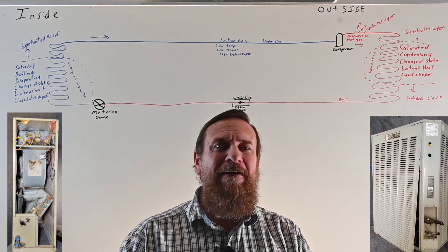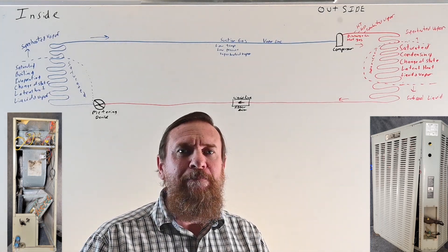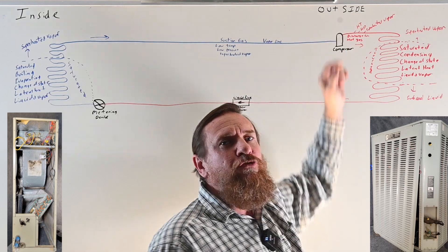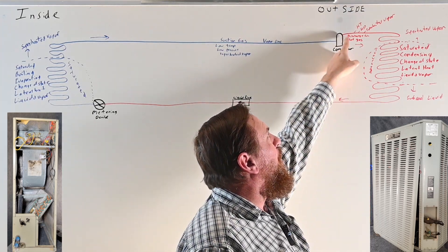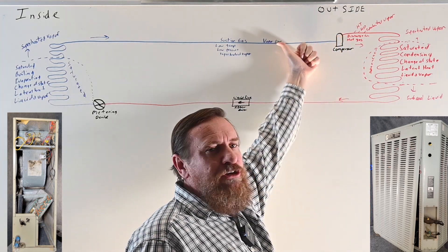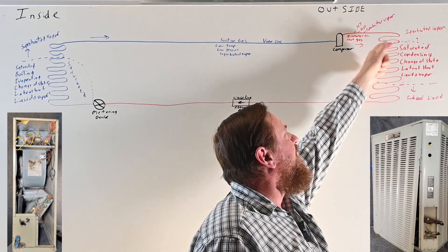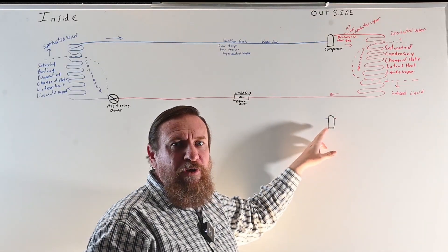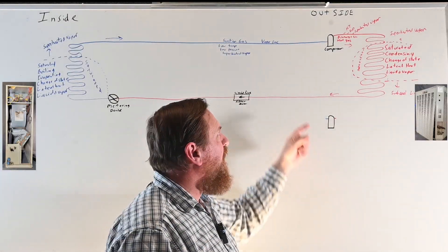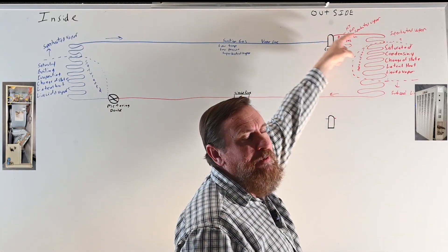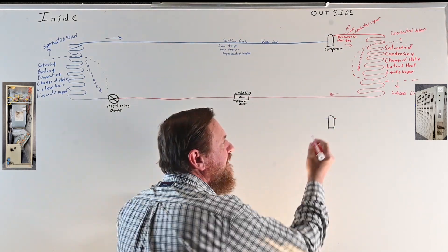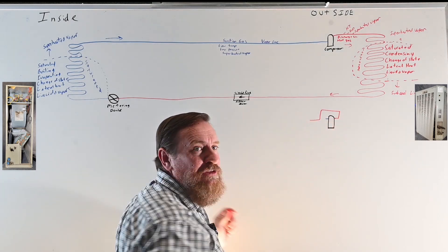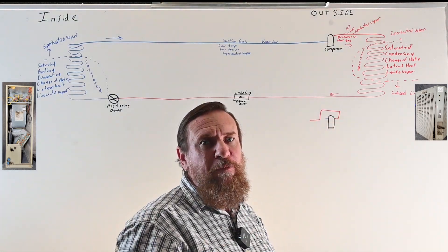But what happens if we simply swap two pipes? If we take the compressor and discharge it in the opposite direction, then connect that side to the suction on the other side — let's look at what that would be. The compressor can only pump refrigerant one direction — it still sucks in low pressure vapor and pumps out high pressure vapor. So we re-pipe that high pressure vapor line and connect it to what was once the low pressure line.